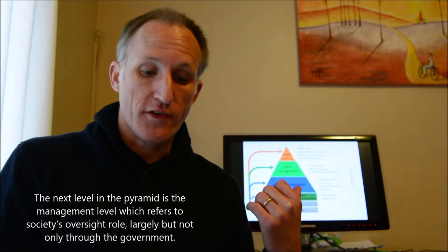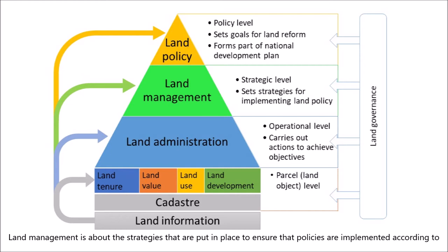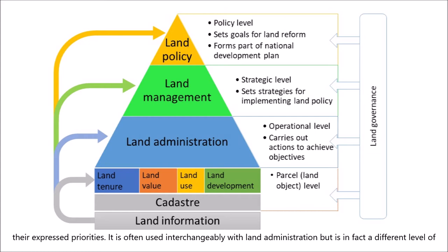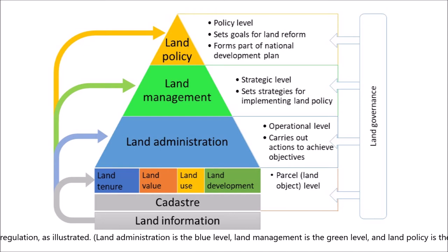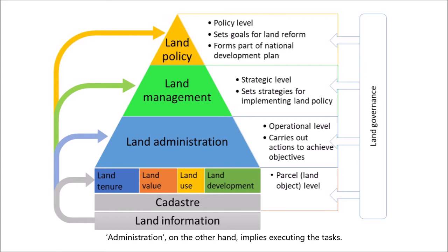The next level in the pyramid is the management level, which refers to society's oversight role, largely but not only through government. Land management is about the strategies that are put in place to ensure that policies are implemented according to their expressed priorities. It is often used interchangeably with land administration but is in fact a different level of regulation. As illustrated, land administration is the blue level, land management is the green level, and land policy is the yellow level at the top. Management is the strategic level because at this level the strategies for implementing policy are set. Administration on the other hand implies executing the tasks.